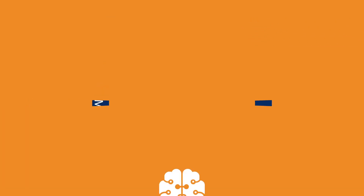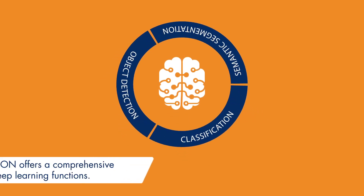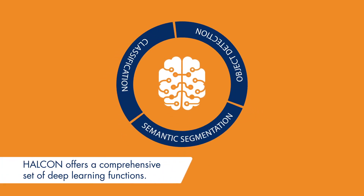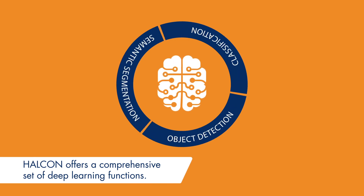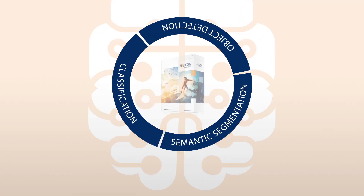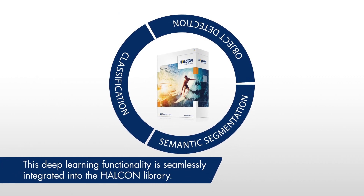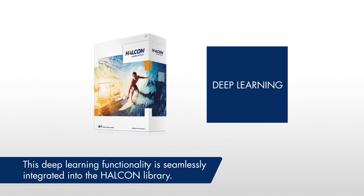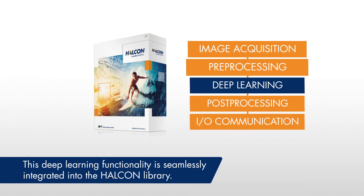With classification, object detection, and semantic segmentation, Hauken users have a comprehensive set of deep learning functions right at their disposal. Its seamless integration in the Hauken library makes this technology a valuable addition to the most comprehensive toolset on the vision market.